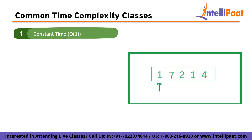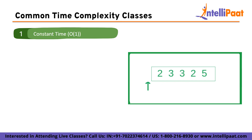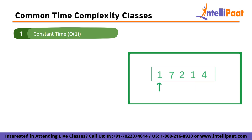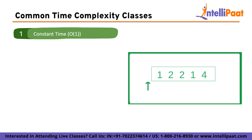First is constant time, or O(1) complexity. Algorithms with constant time complexity have a constant runtime regardless of the input size. These algorithms perform a fixed number of operations, making them highly efficient. Examples include accessing an element in an array by index, performing basic arithmetic operations, or retrieving a value from a hash table.